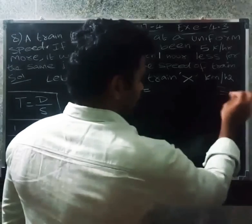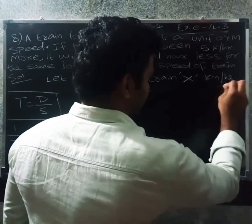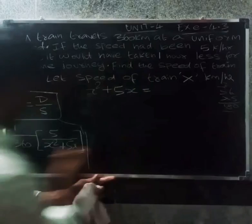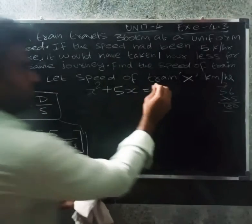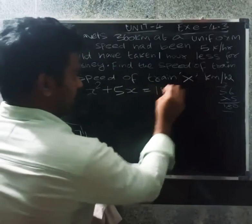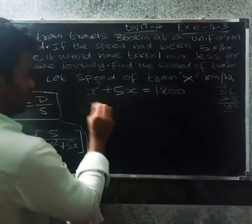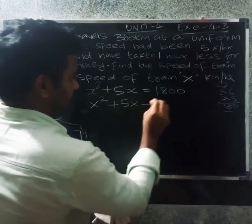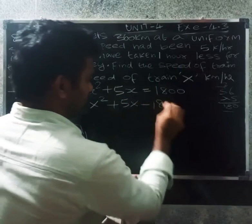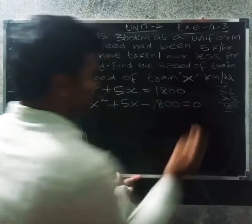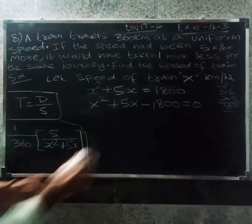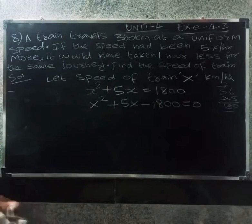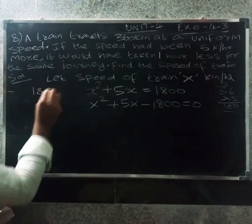360 into 5 equals 1800. So the equation becomes: X squared plus 5X minus 1800 equal to zero.